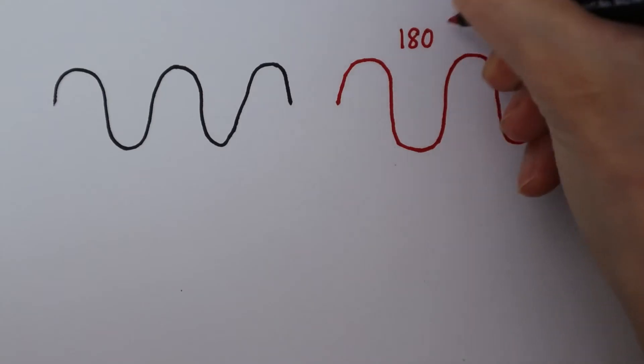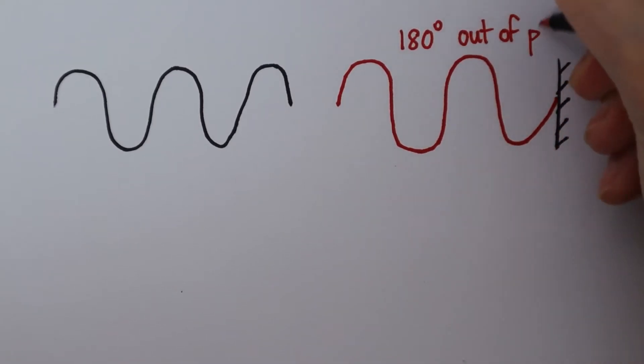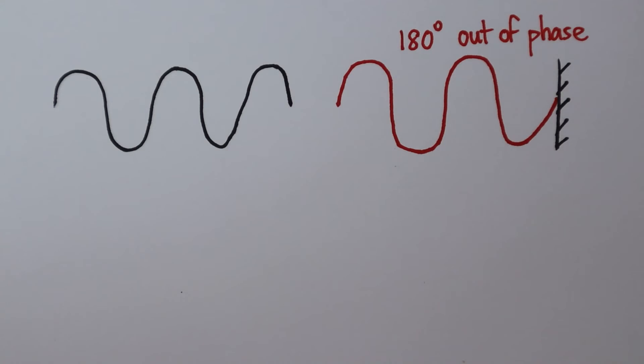the wave becomes 180 degrees out of phase with the original wave. Imagine the original wave flipping upside down so that these two waves are now in anti-phase.